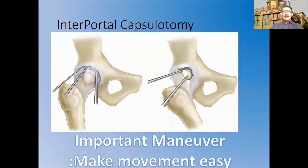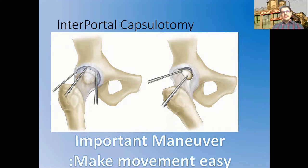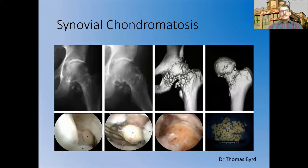Inter-portal capsulotomy is one of the important key steps — it is an important maneuver that increases instrument maneuverability. Ideally it should be done between the anterolateral and anterior portals, using either a beaver blade capsulotomy knife or, in some circumstances, a radiofrequency device.